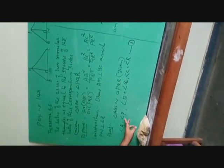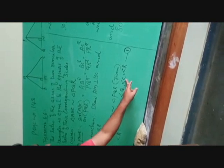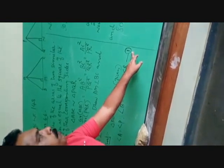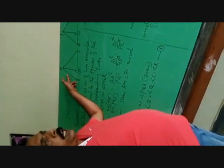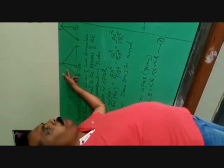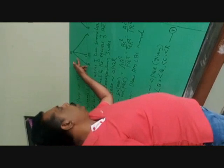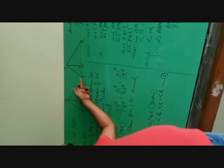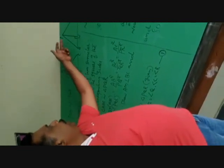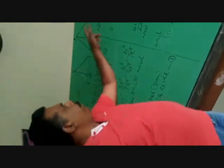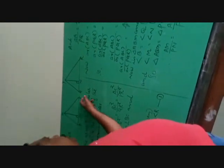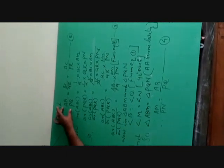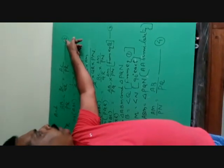We can keep this as equation number 1. Then, the corresponding sides are proportional — it means the ratio of the corresponding sides are equal. We can write: AB by PQ is equal to BC by QR is equal to AC by PR. This is equation number 2.